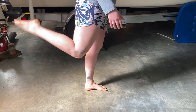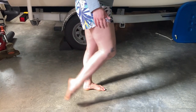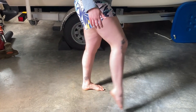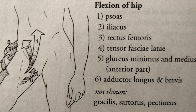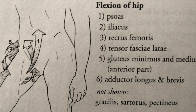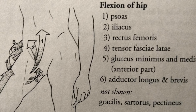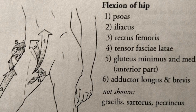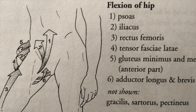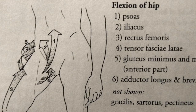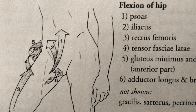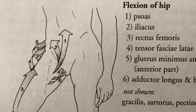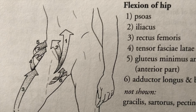The next step is propelling the leg forward. This can be broken down into hip flexion and knee extension. As mentioned earlier as the antagonizers to hip extension, now the primary muscles responsible for hip flexion are the iliopsoas, rectus femoris, TFL, gluteus minimus, and medius.